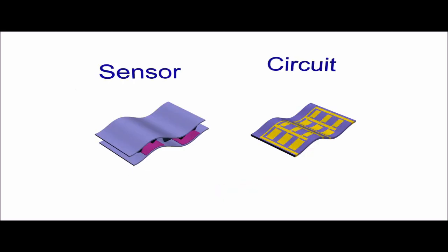Our artificial mechanoreceptor mimics this process by coupling a pressure sensor with a flexible circuit layer that produces the electrical pulses.